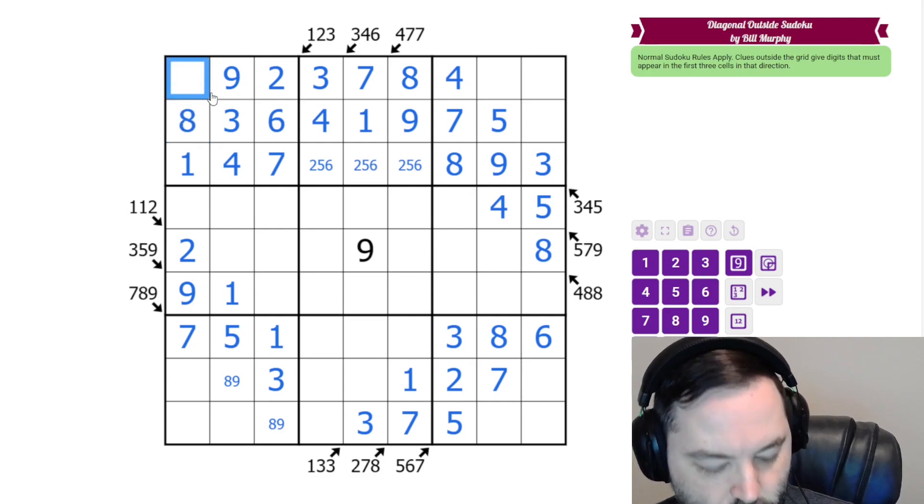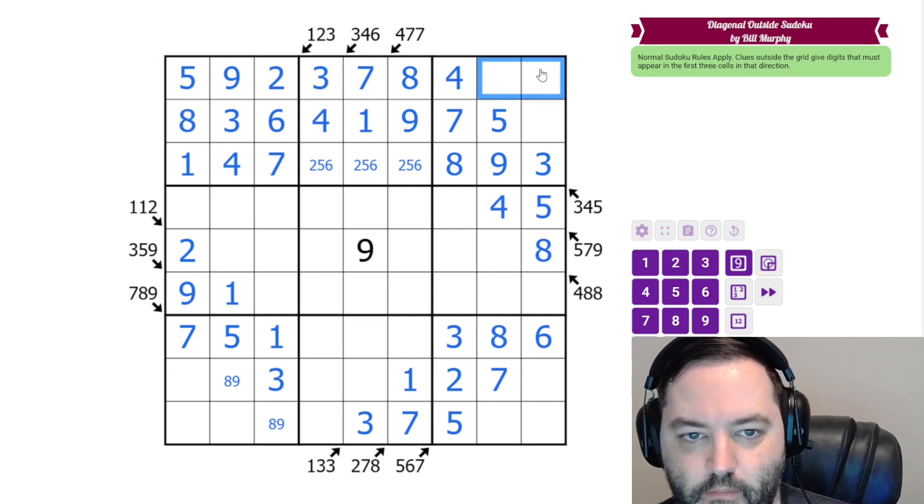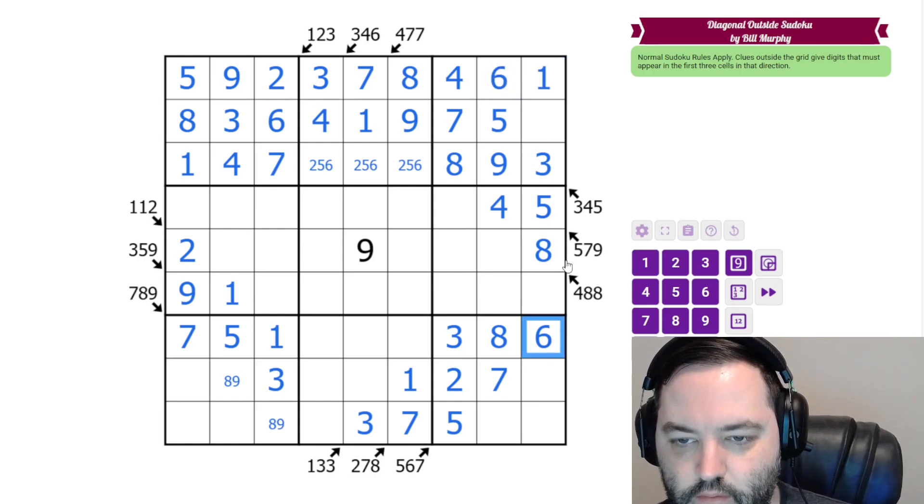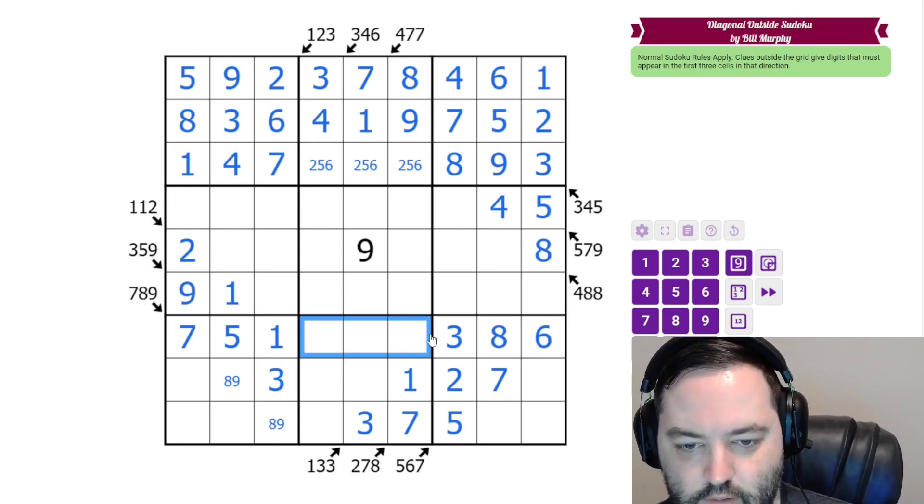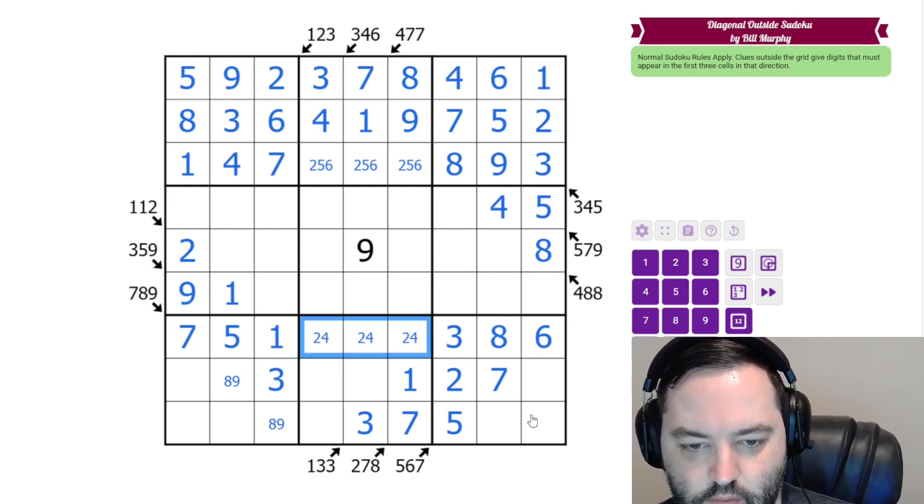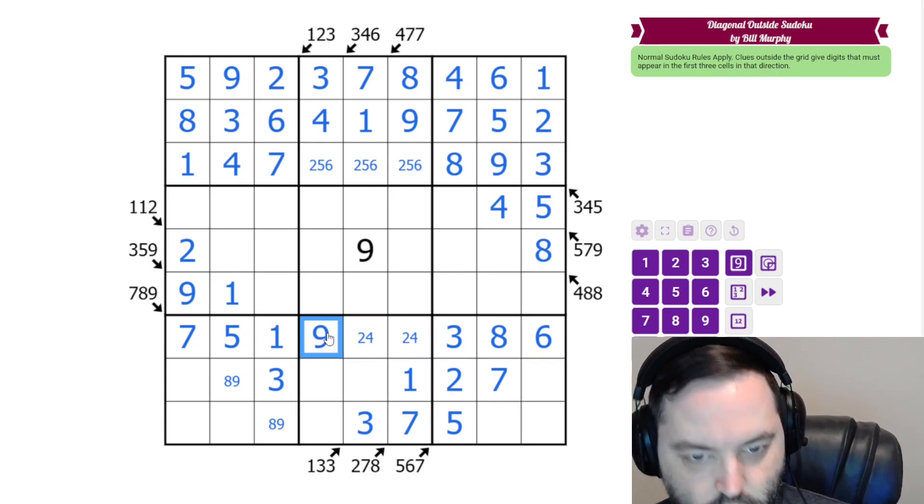We have a 5 here, so 5 goes at the top. These are 1 and 6, which are resolved. From that 6, this is a 2. Down here we have 2, 4, 9. That's not 9, that's not 9. So this is our 9.